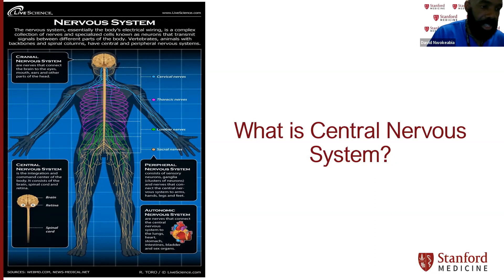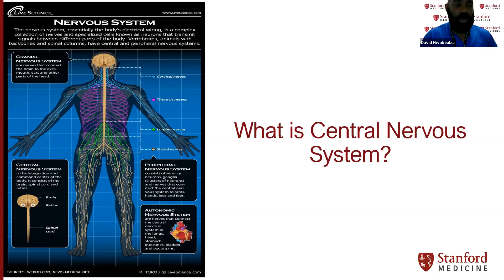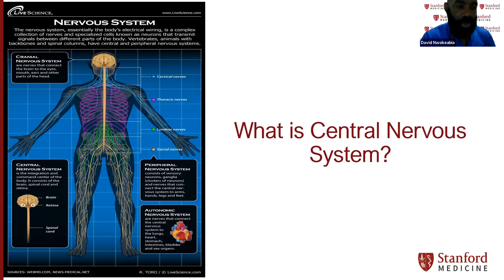We also have the cranial nervous system, which consists of the brain, the eyes, the ears, and other things that come together to perceive and capture images we can feel. Then there is the peripheral nervous system — think of this as the periphery, the nerve endings in your fingers and throughout your body. The peripheral nervous system is responsible for taking information from the periphery and transmitting it all the way to the brain via established communication channels.